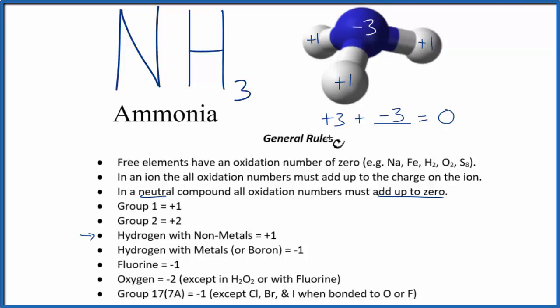So to recap, we found the oxidation numbers for the elements we knew - the hydrogen here - and then we used that along with the fact that this is a neutral molecule, the total oxidation numbers add up to zero, to find the unknown one, the nitrogen.